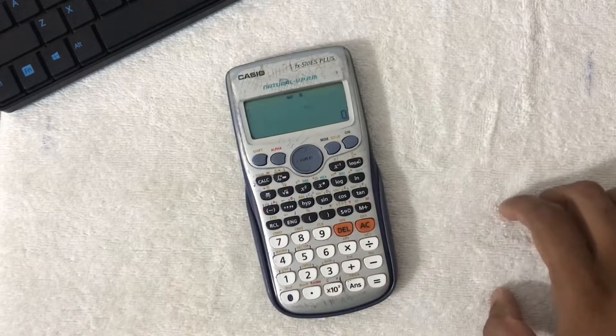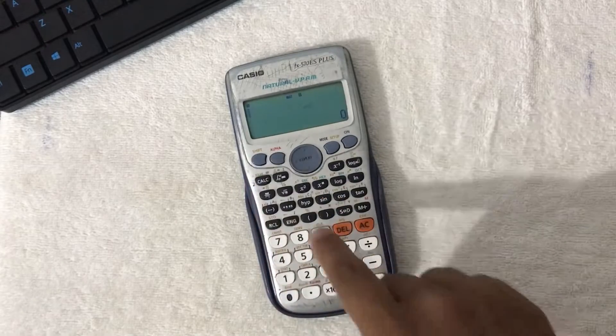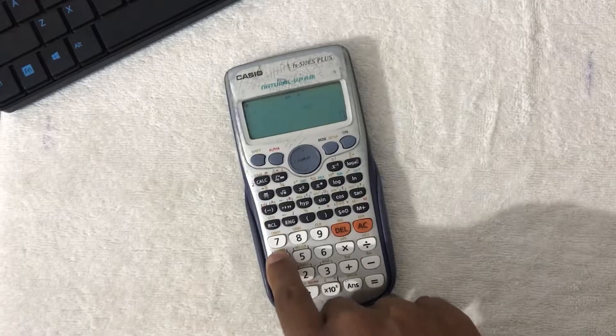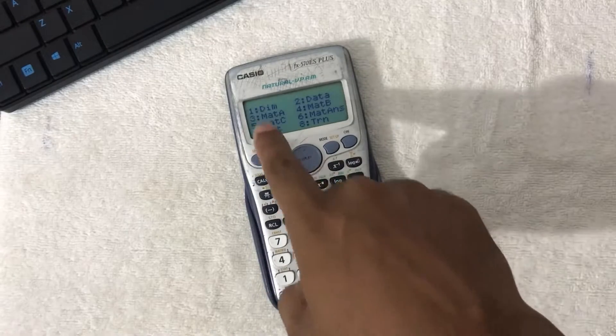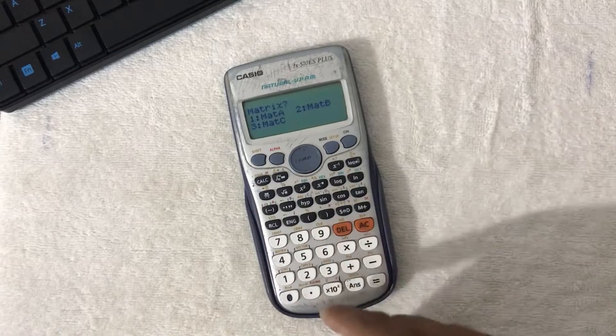Let's start. Press shift to enter the matrix option. You need to choose the dimension - that's the first one. Then you can choose matrix A, matrix B, or matrix C. I am using matrix A, which is the first number.